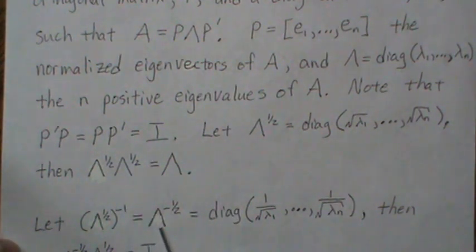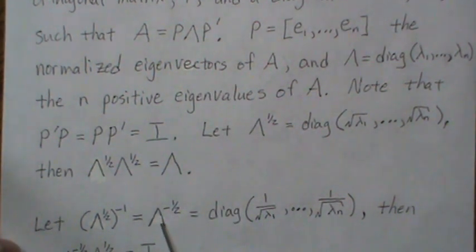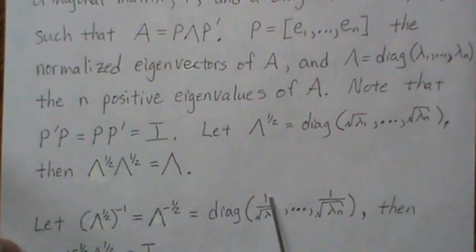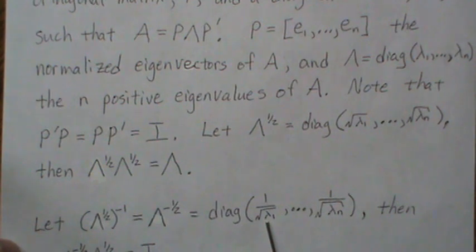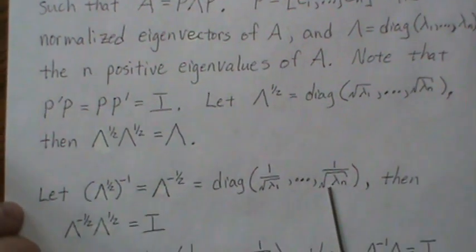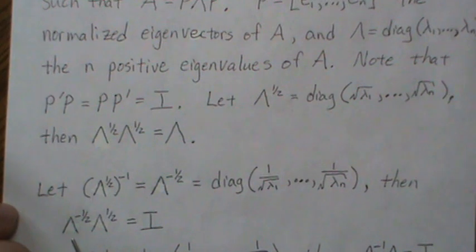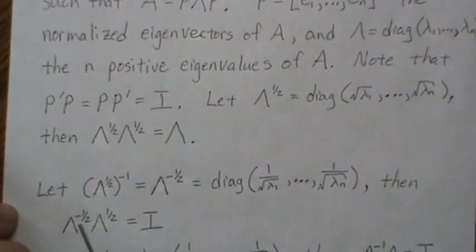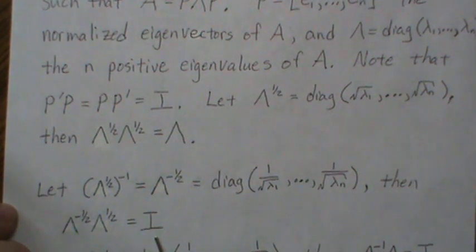If we let lambda to the one-half inverse, which is just commonly written lambda to the minus one-half, be the diagonal elements of the reciprocals of the square root of the eigenvalues, then we can show that lambda to the minus one-half times lambda to the one-half is equal to the identity matrix.